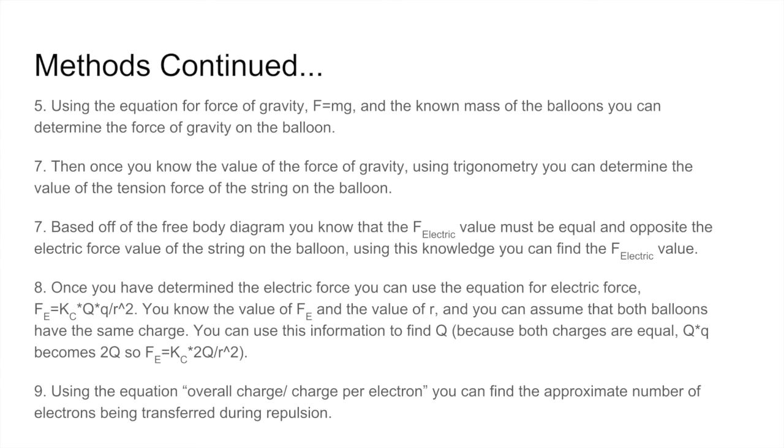Because both charges are equal, big Q times little q becomes 2q, so Fe equals kc times 2q, all divided by r squared. Using the equation for overall charge divided by charge per electron.